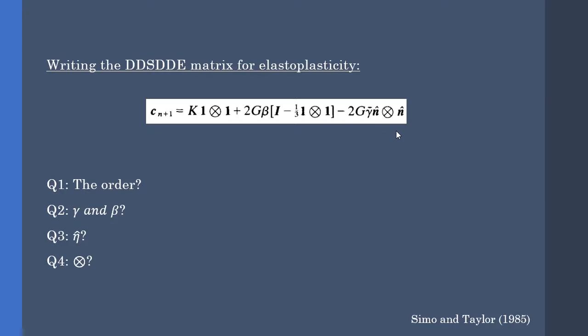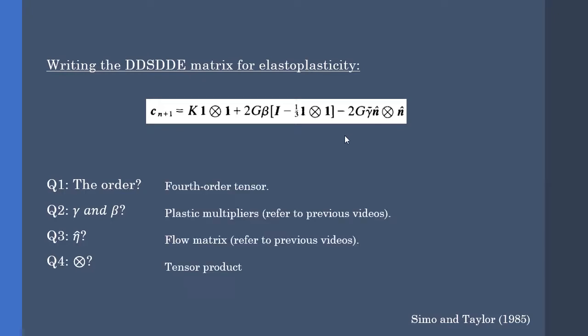And what is this symbol here? Let's commence by answering these questions. The tangent moduli is a fourth-order tensor, therefore this bounded identity matrix is also a fourth-order tensor. Gamma and beta are the plastic multipliers. Please refer to my previous videos.